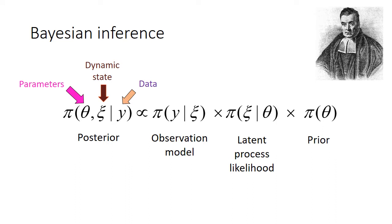Theta and xi cannot be precisely known, but a probability distribution for these quantities, given the data, can be defined, and this is called the posterior. Application of Bayes' theorem implies that the posterior can be written as the product of an observation model, which measures how close the data is to some underlying dynamic state, a latent process likelihood, which tells us how likely the dynamic state is given a set of model parameters, and a prior, which captures any pre-existing estimates for model parameters.